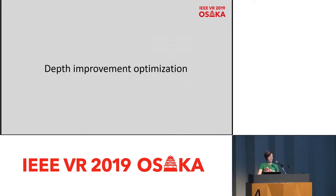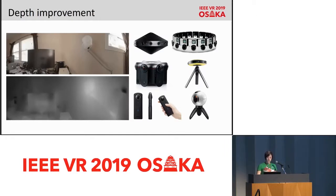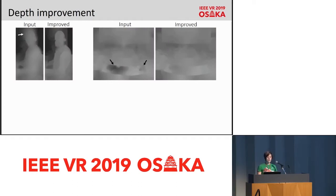Now let's talk about the depth improvement optimization. We already have a video layer representation that can support head motion parallax. However, we still need to deal with depth maps that contain harmful artifacts that will heavily influence the final results. We have designed an optimization algorithm tailored to our purposes and identified three main sources of artifacts: bleeding artifacts around object boundaries, discontinuities in what should be smooth gradients, and strong discontinuities in what should be a continuous surface. We focus on minimizing these problems to make the scene look more visually plausible and appealing.